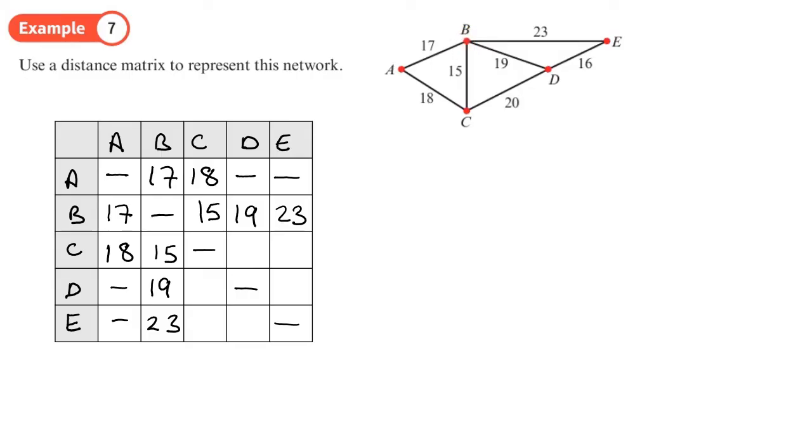Then we move on to C, which is here. Now C to D, that's going to be 20. C to E, nothing there. So 20, nothing there. We've only got a couple more cells to fill in. D to E is what we're going to fill in. So you just have a look. D to E is 16. That's going to be 16 there. There we go, it's completed.